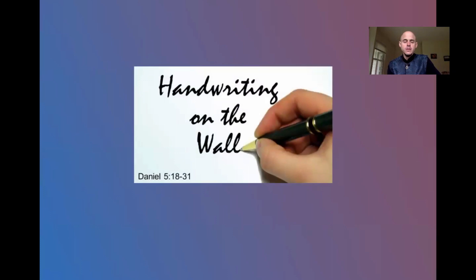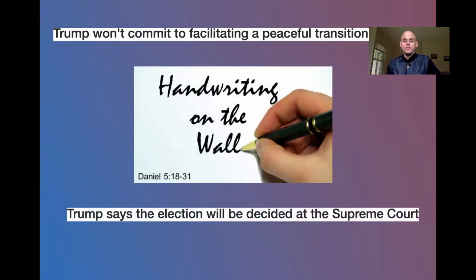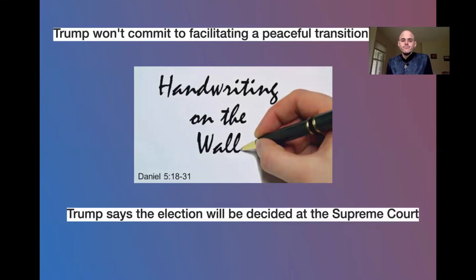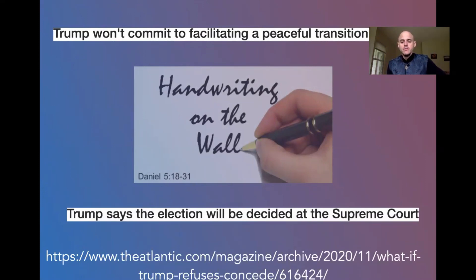The handwriting seems to be on the wall — that's actually a phrase from the Bible, Daniel, book five. Here's the announcement: Trump won't commit to facilitating a peaceful transition. He said, 'Well, we'll have to see what happens.' The election will be decided at the Supreme Court. He's telling us exactly what the astrology tells us. This is the article I'm talking about: 'What if Trump refuses to concede?' at TheAtlantic.com — there's a really good interview podcast that just came out.